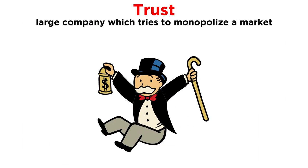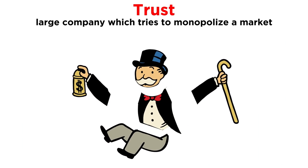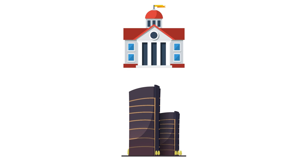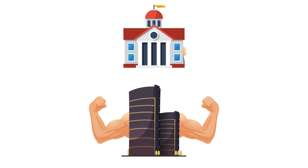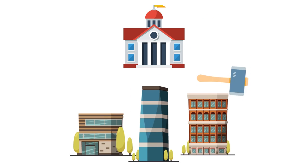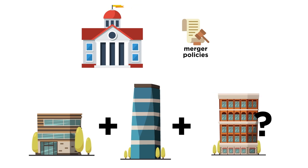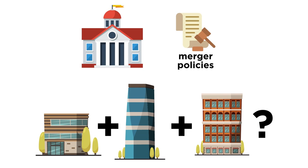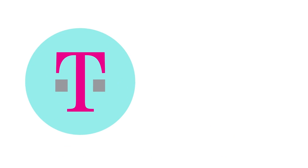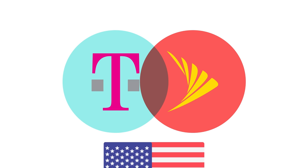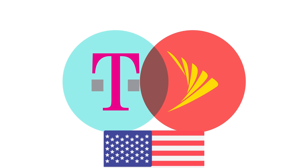Indeed, today, breaking up a monopoly remains a way governments may attempt to make markets more competitive. If the government decides a company has become too powerful in a market, it may decide to force them to splinter into smaller, separate companies. Related to this, governments often have merger policies which regulate how, or even if, companies can merge together. When two giant telecommunications companies, T-Mobile and Sprint, wanted to merge in 2018, they first had to get the approval of the United States government.